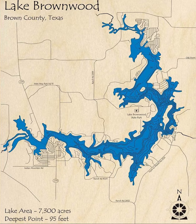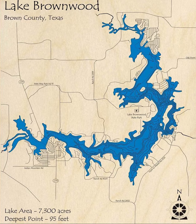Dam construction started in 1930 and was completed in 1933. A large flood filled the reservoir in July 1932, but the water was released to complete construction of the dam. Deliberate impoundment of the reservoir began in July 1933.